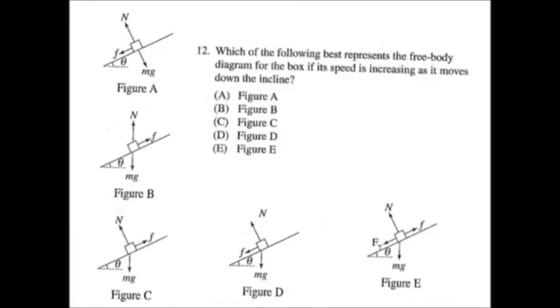Which of the following best represents the free body diagram of a box with speed increasing, moving down the incline? Speed increasing, moving down, so that's going to be E.